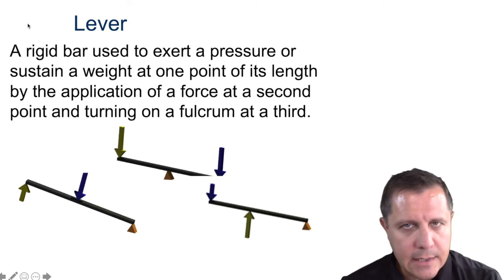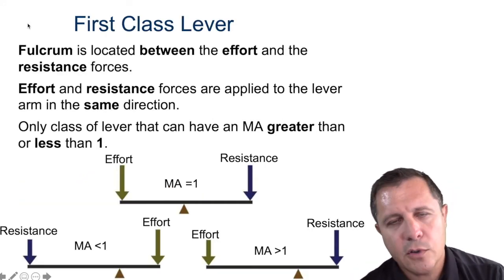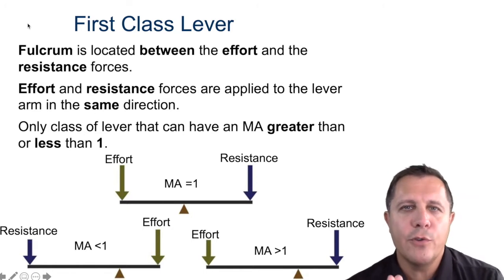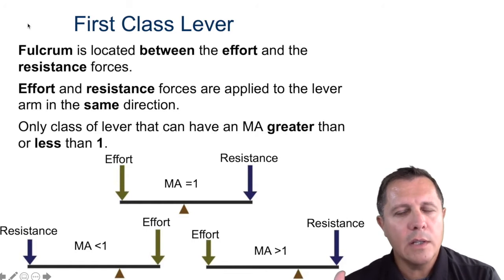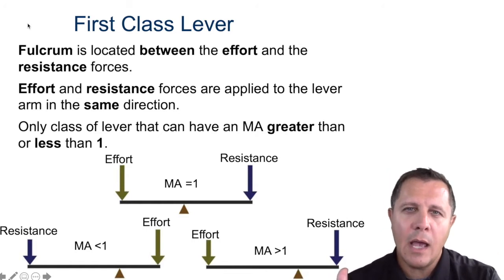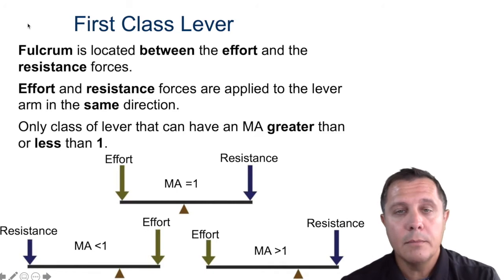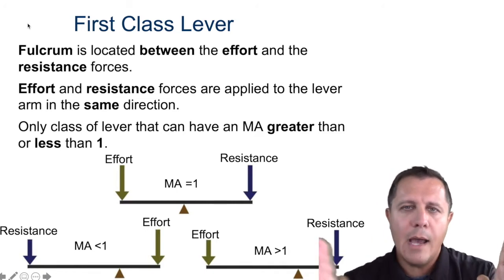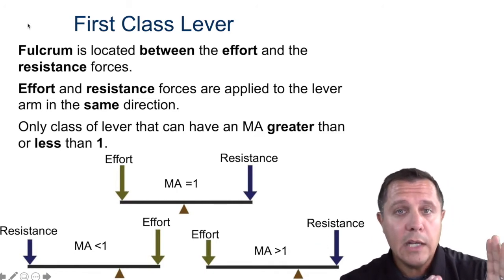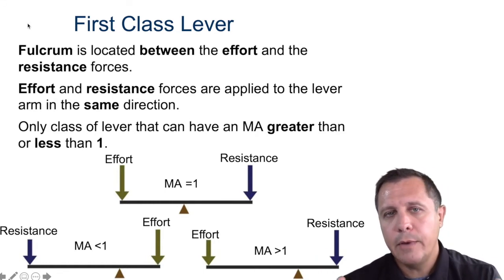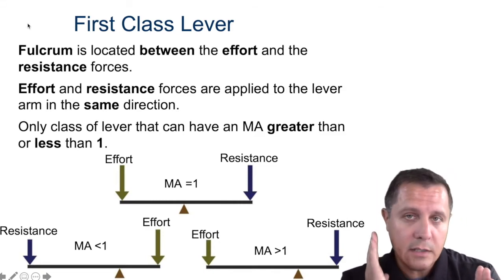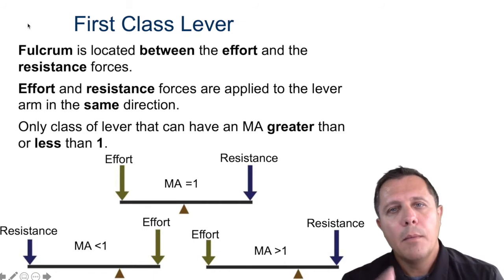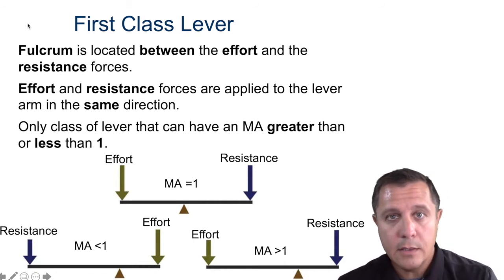Let's see how they compare. A first class lever will always have the fulcrum in the middle of the lever — you'll have the effort on one side, the resistance on the other side, the fulcrum in the middle. Think of any seesaw. The fulcrum can slide back and forth, which would change the mechanical advantage. You can have a mechanical advantage greater than one, less than one, or exactly one — first class levers can have all three scenarios.